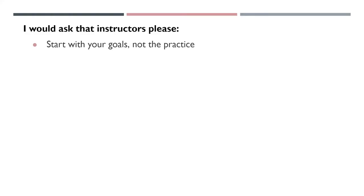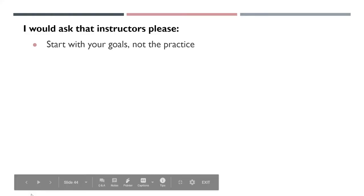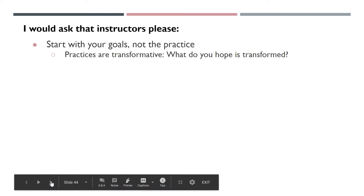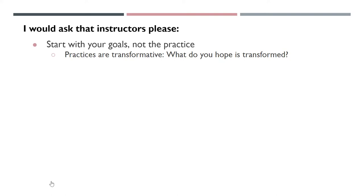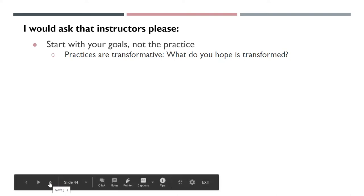I'd really encourage folks to work with the idea of backwards design — that is, start with your goals and then choose an exercise or an activity that can help you get there. Practices are transformative. Start by reflecting on what it is that you hope is transformed. Perhaps your students are competitive and you want them to be collaborative — what exercises, activities, and practices can help fulfill that goal?